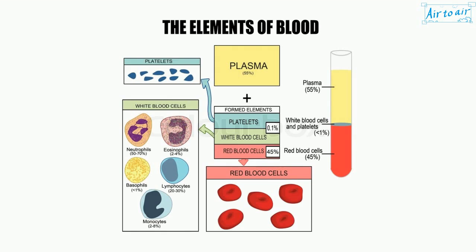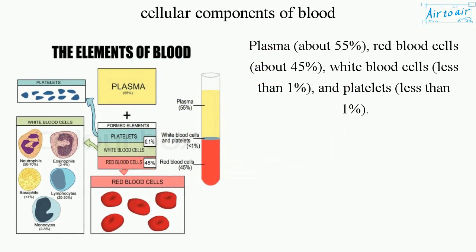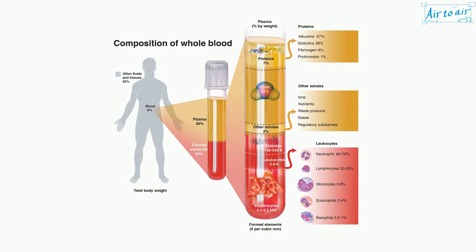Cellular Components of Blood: Plasma, about 55%; red blood cells, about 45%; white blood cells, less than 1%; and platelets, less than 1%.